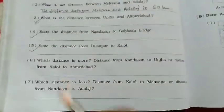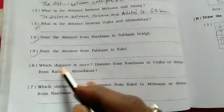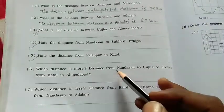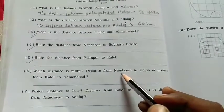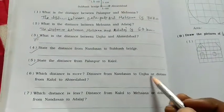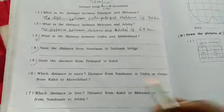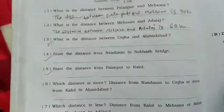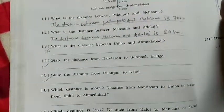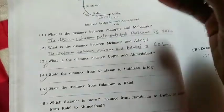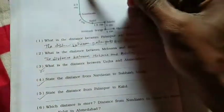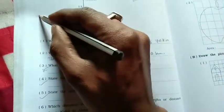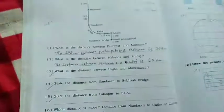And the next question: Which distance is more? Distance from Nandasan to Unja, or distance from Kalol to Ahmedabad? Distance from Nandasan to Unja is 2.5 to 4.5 centimeters, so 4.5. And next...